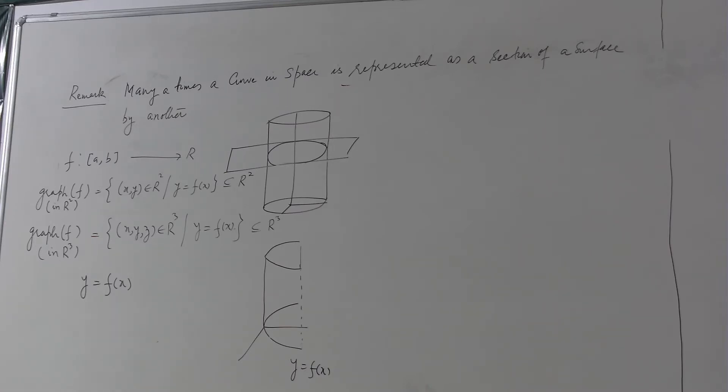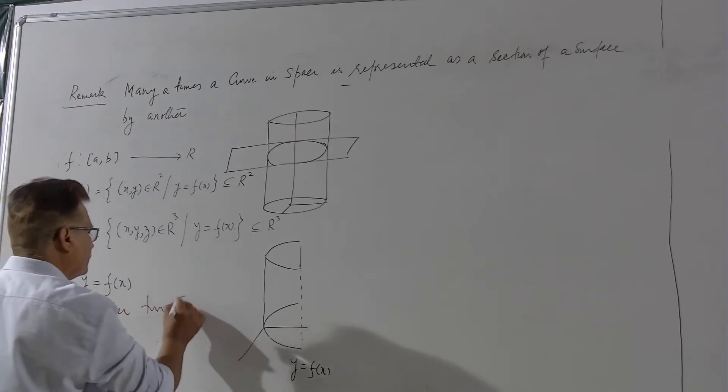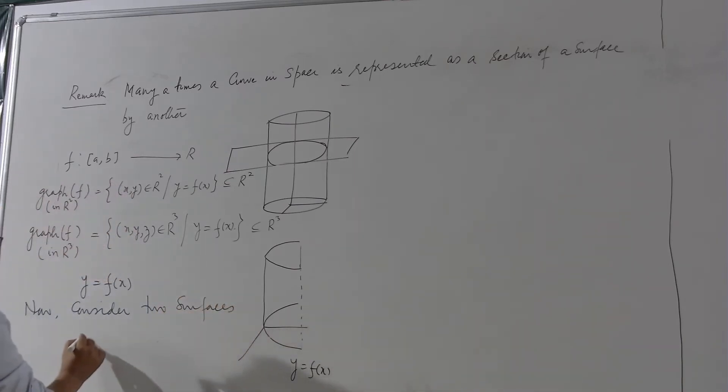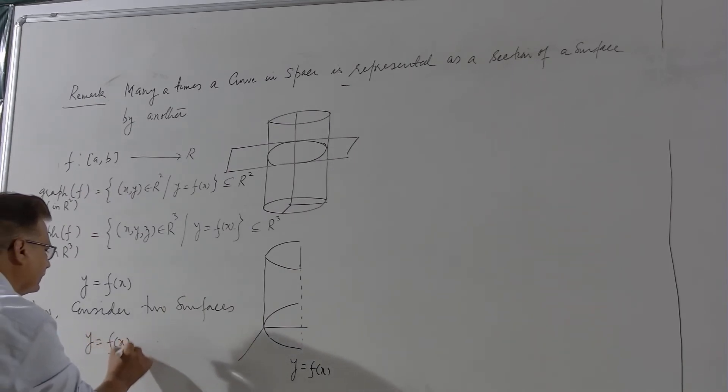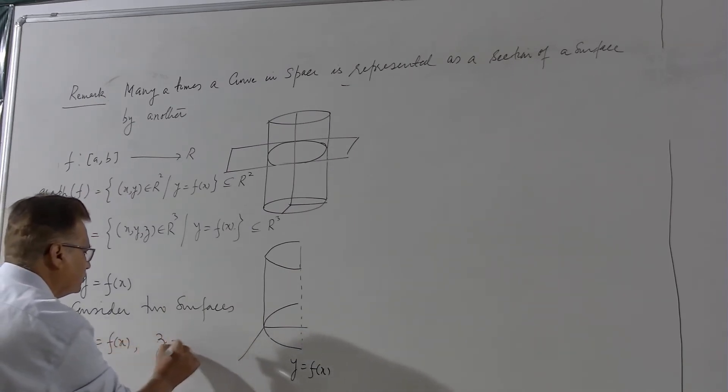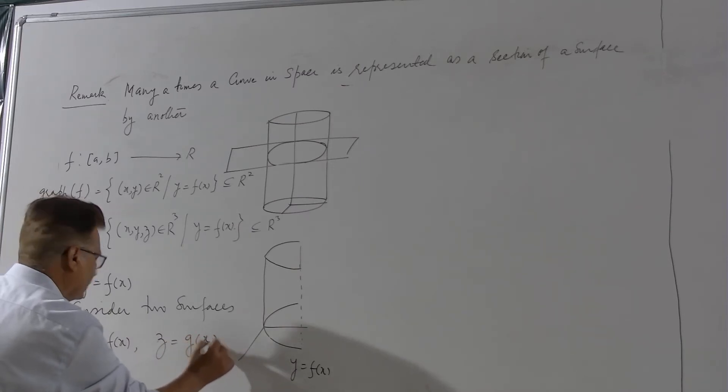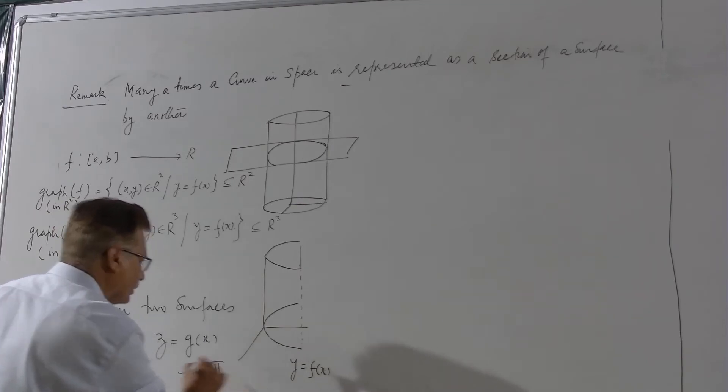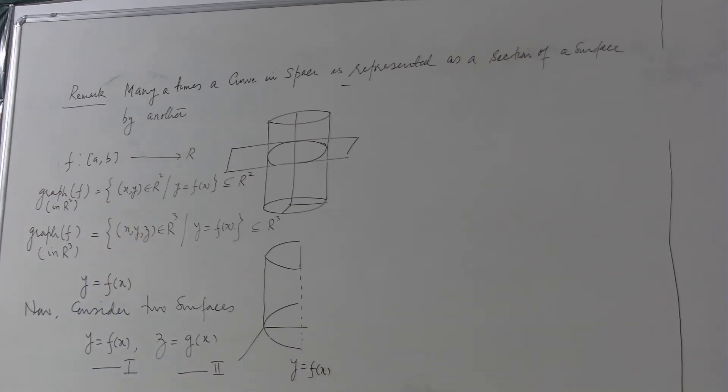Now consider two surfaces. y equal to f(x) number one and say z equal to g(x) number two. These are the two surfaces, one and two.